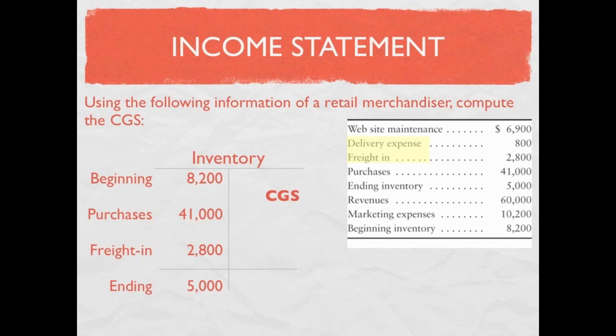Now we have all of our debits and we know our ending inventory, so we can calculate cost of goods sold. We take all of our debits — $8,200 plus $41,000 plus $2,800 — and subtract the ending inventory of $5,000, which gives us cost of goods sold of $47,000.